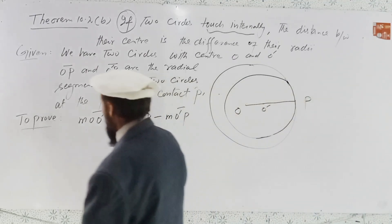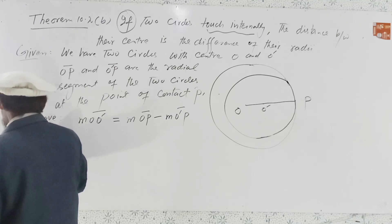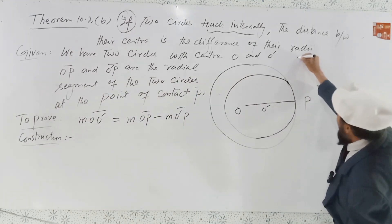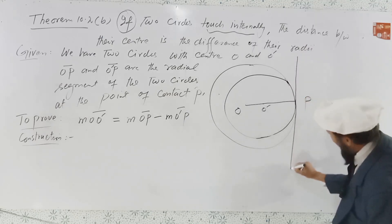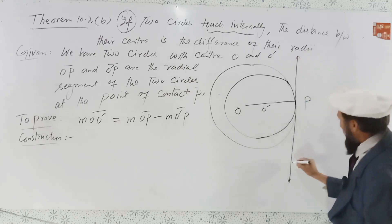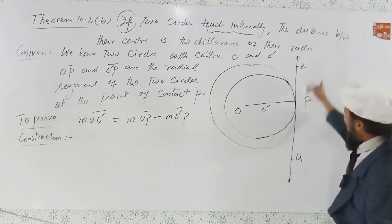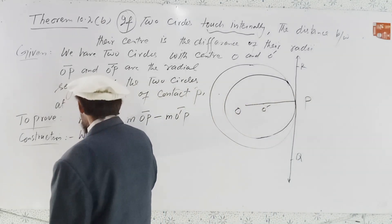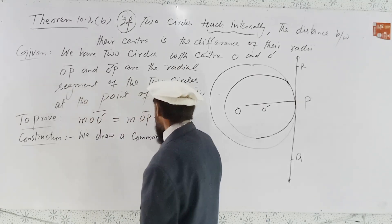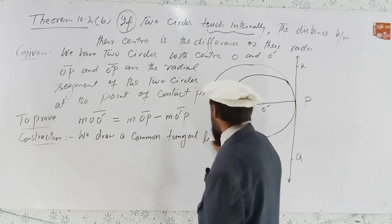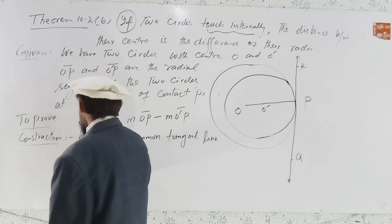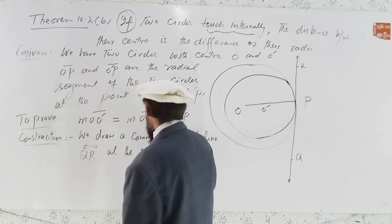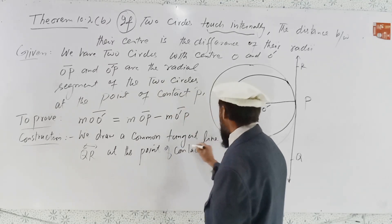Construction is required here. We draw a common tangent line QR. QR is a tangent that passes through the point of contact P. We draw the common tangent line QR at the point of contact P.